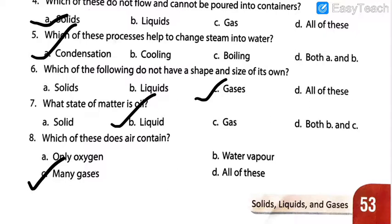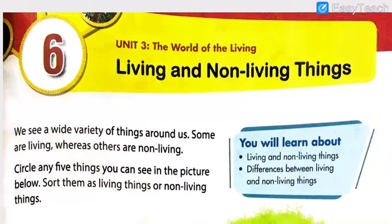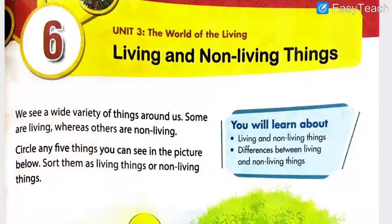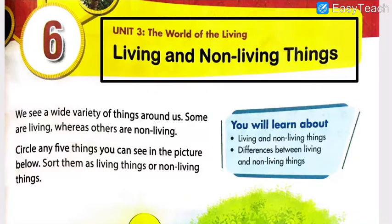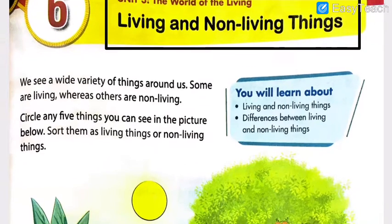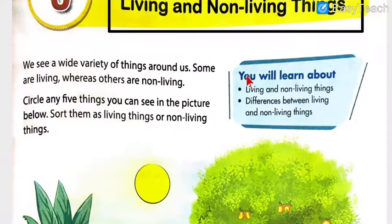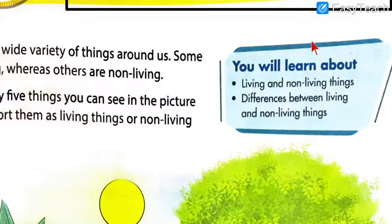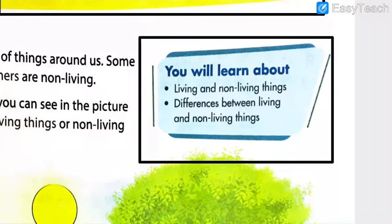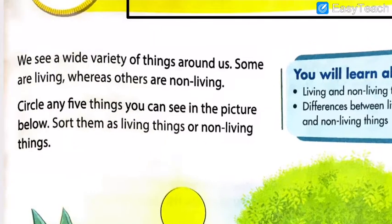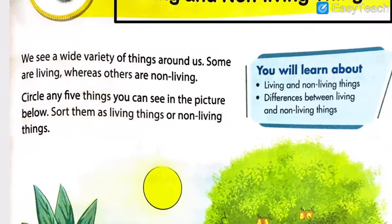So with this, our chapter five revision is over. Let us move towards the next chapter — chapter number six: Living Things and Non-Living Things, which comes in unit three: The World of the Living. Let's get started with this new chapter. I hope you have also turned the page of your textbook and are ready to understand chapter number six. What are you going to learn? First of all, living and non-living things, and differences between living things and non-living things.